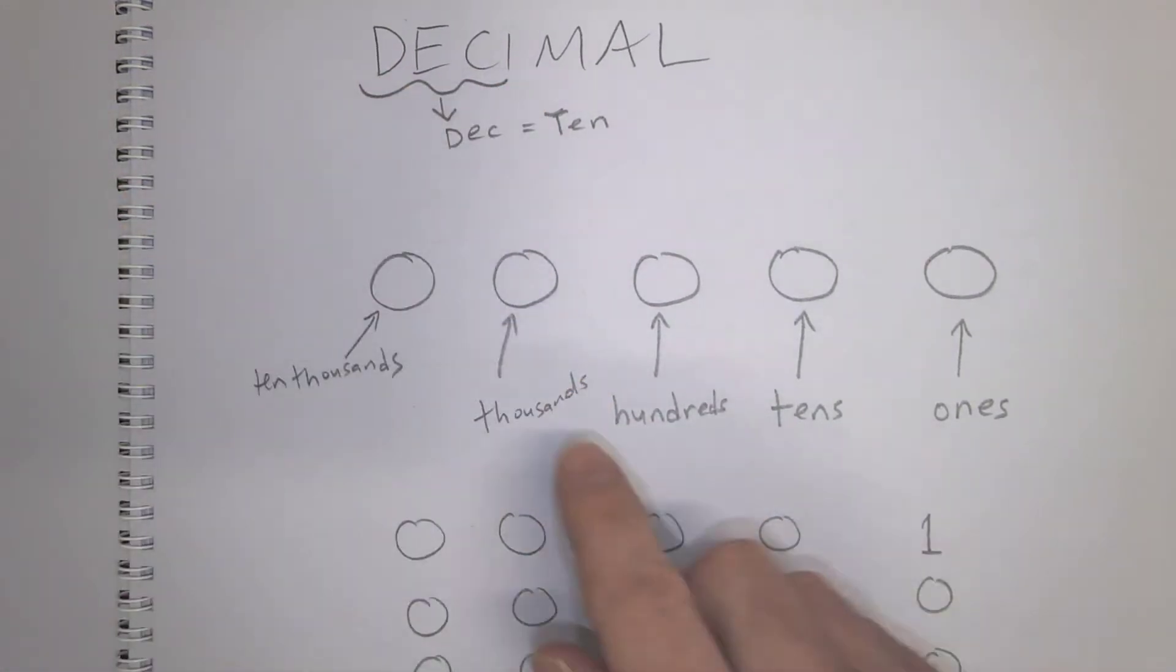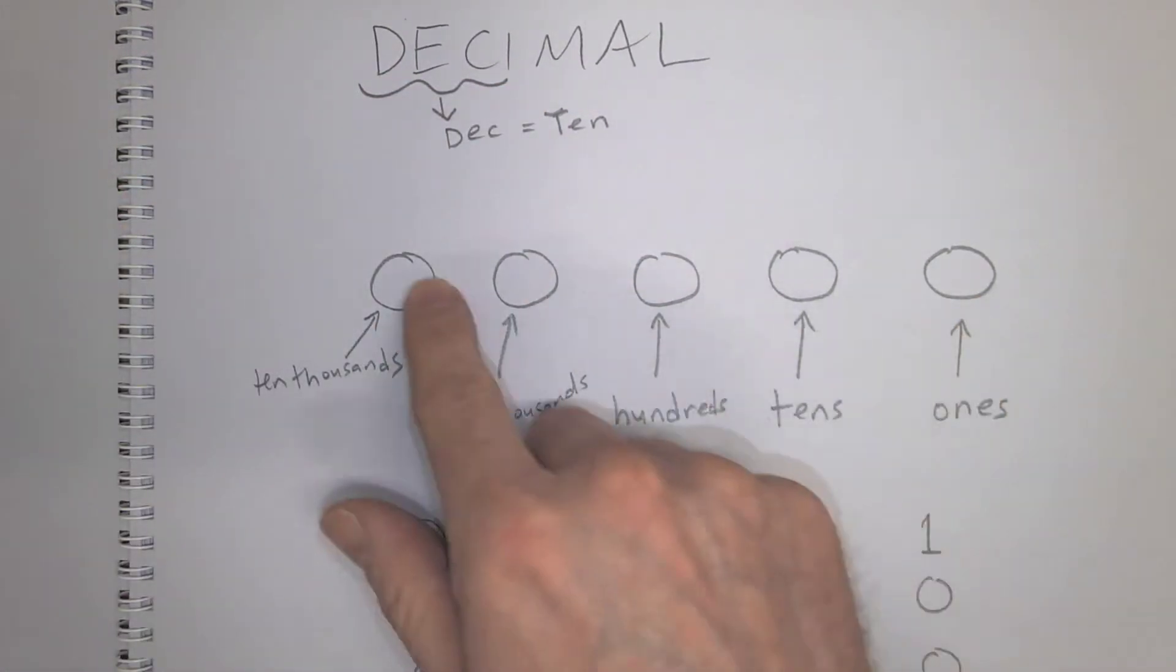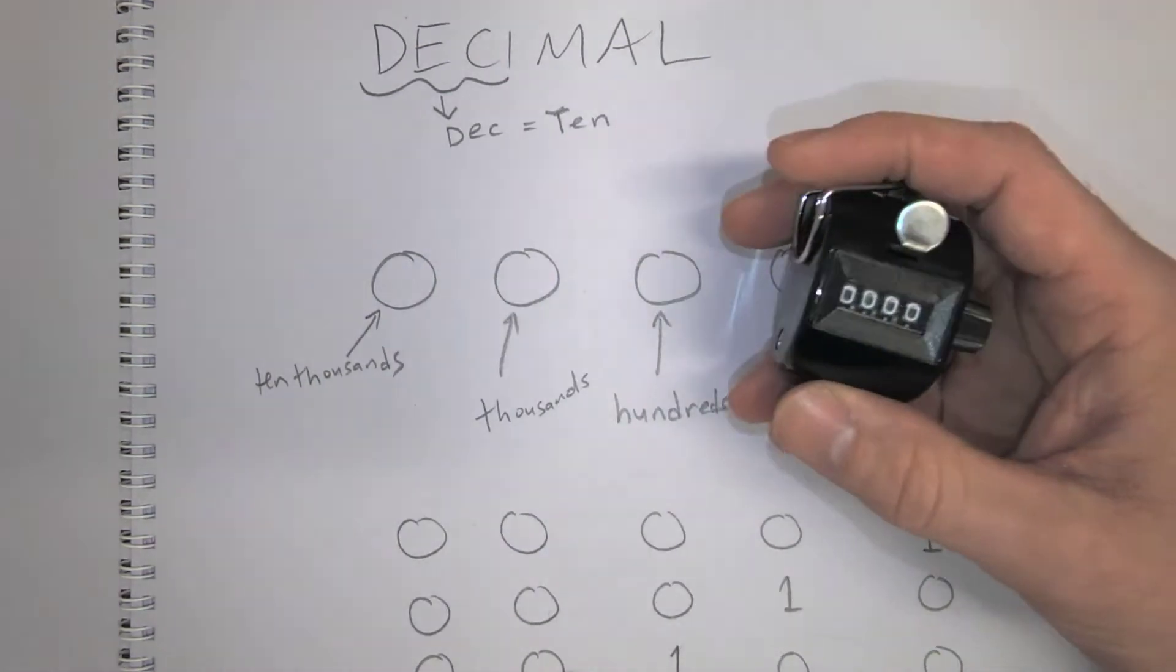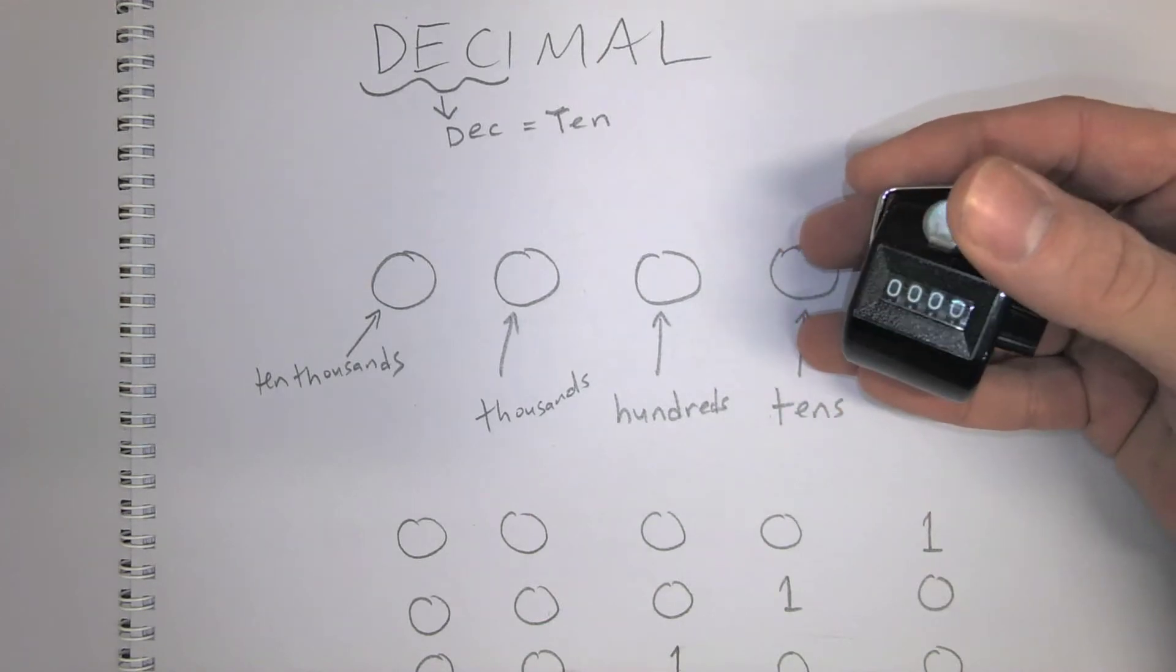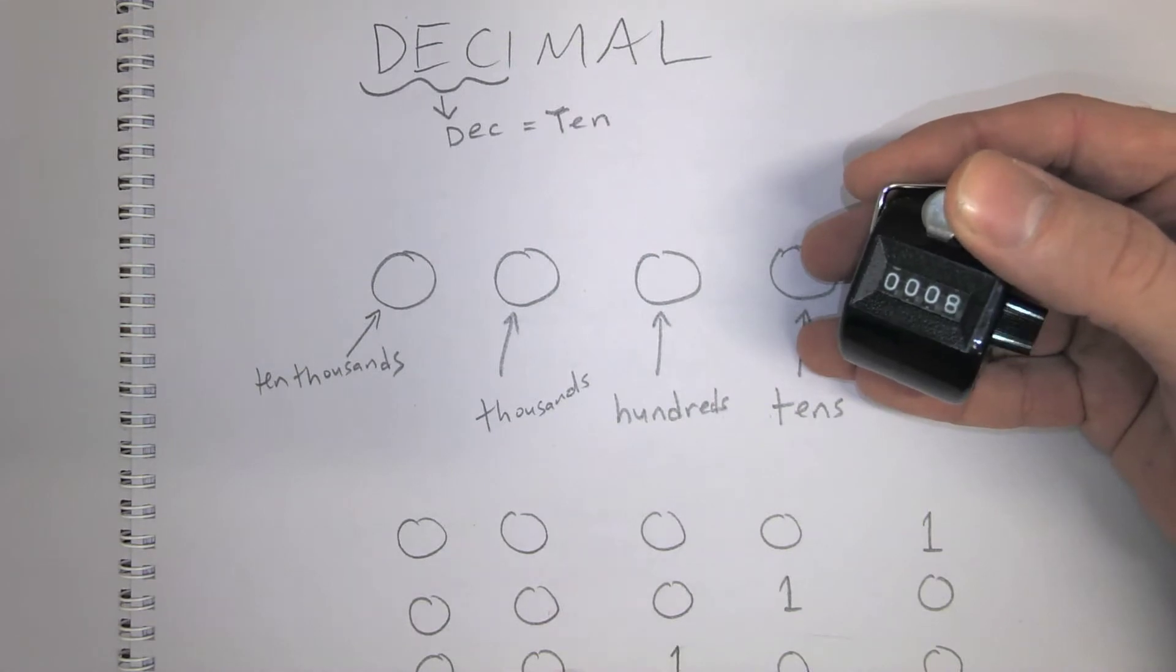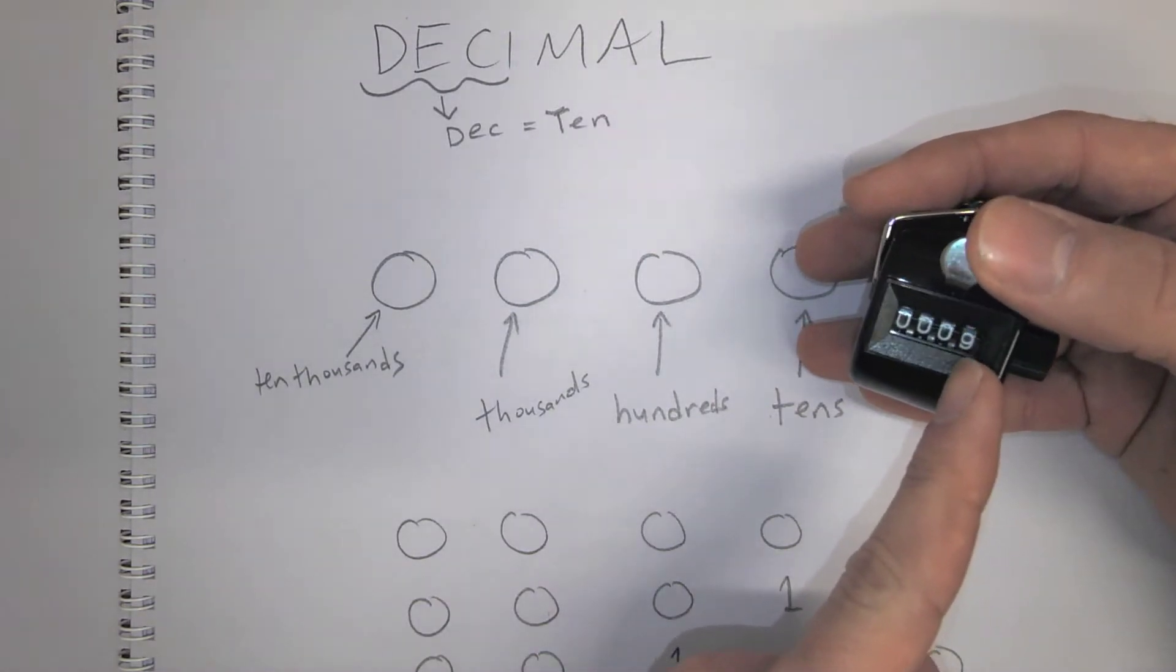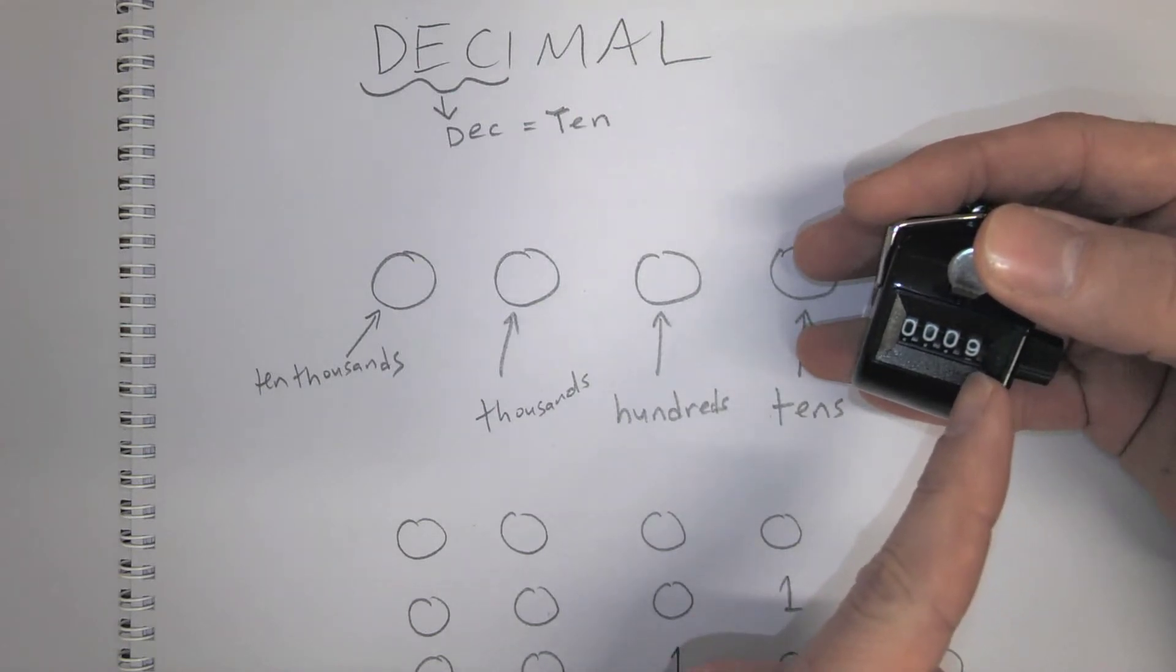And what that means is each of these numbers, each of these placeholders, there are 10 possible things this can be, right? So if I'm counting here, I'm starting at 0, and then I go to 1, 2, 3, 4, 5, 6, 7, 8, 9. I've gone through 10 possibilities in this thing here.